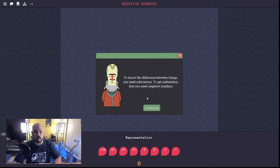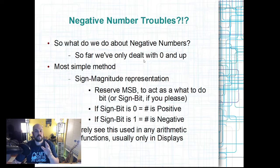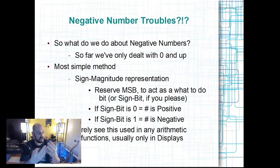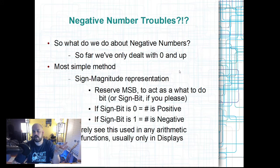To know the difference between things you need subtraction; to get subtraction you first need negative numbers. We're going to look at a slideshow. So far in Turing Complete we haven't dealt with negative numbers — it's all been positive numbers: 1, 2, 4, 8, 16, 32, 64, and 128, and some combination of those adds up to 255 or zero. Now we're going to start getting into negative numbers.